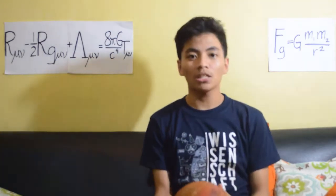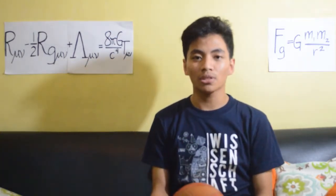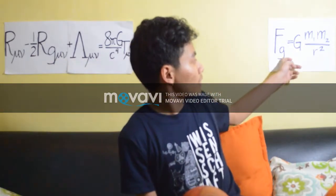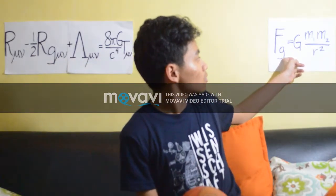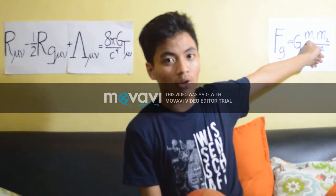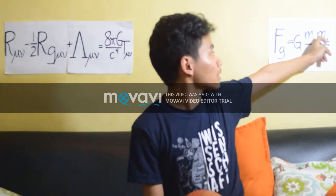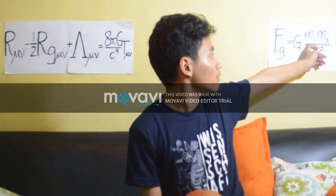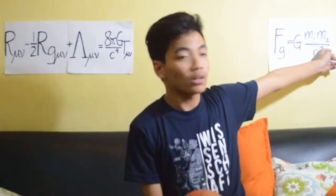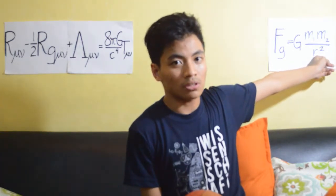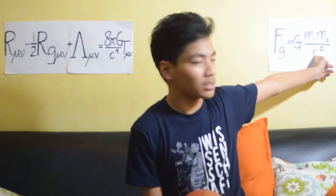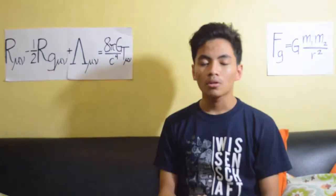What does Newton's equation say? It says that the force of gravity is equal to the gravitational constant times the first mass of the object, times the second mass, divided by — or inversely proportional to — the square of the distance, or radius of separation between the objects.